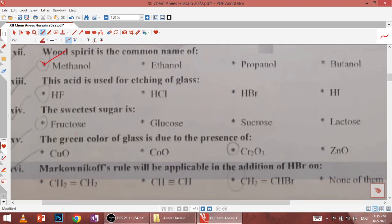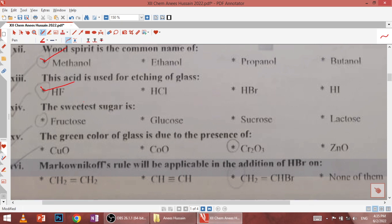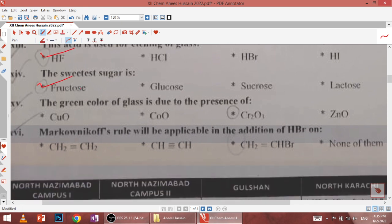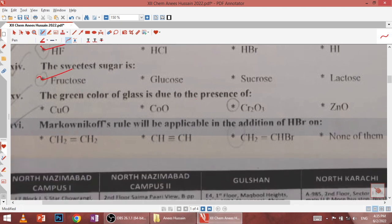Thirteenth, the acid used for etching of glass is hydrofluoric acid. Fourteenth, the sweetest sugar is fructose. Fifteenth, the green color of glass is due to the presence of chromium oxide.